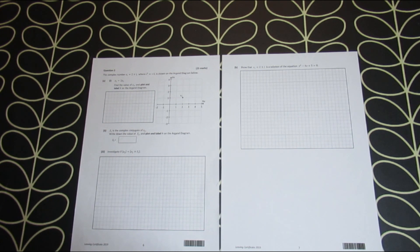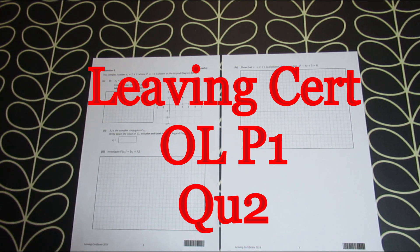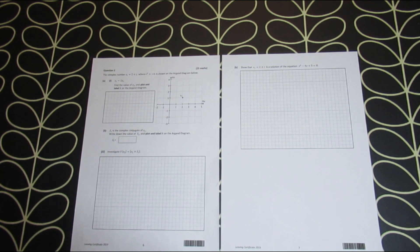Today we're going to look at the 2019 Leaving Cert Ordinary Level Paper 1 Question 2. This is a complex numbers question and I'm going to do it bit by bit and I will zoom in so you can get a good look at the question as I do it.